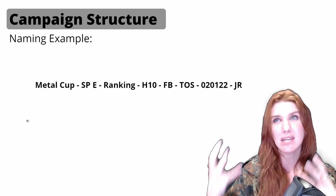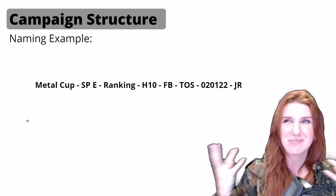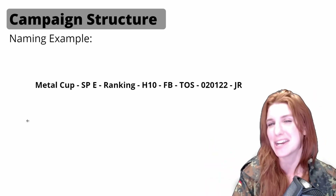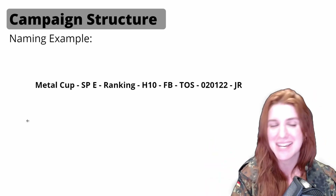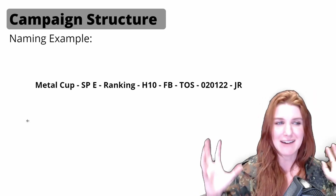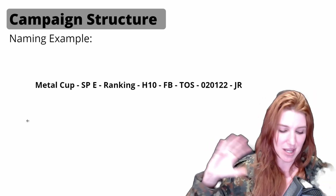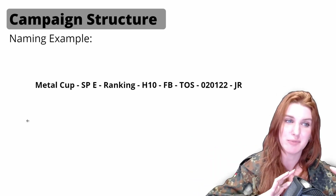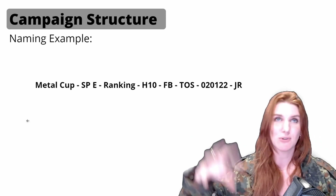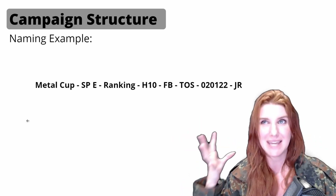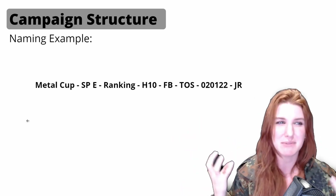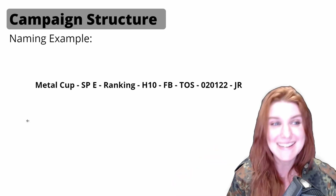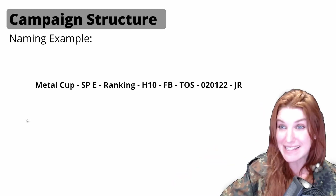This campaign naming structure has evolved over several iterations and is now very solidified. We've boiled it down to the most important pieces that give us clear visibility when we're running hundreds and thousands of campaigns for clients across many different accounts. Anyone in the agency or any of our clients can go into their accounts and immediately understand the strategy and what we're doing. It cuts down a whole lot and provides so much clarity.